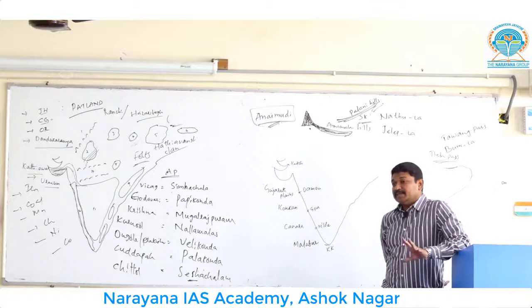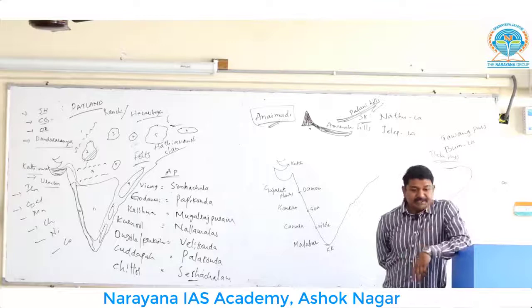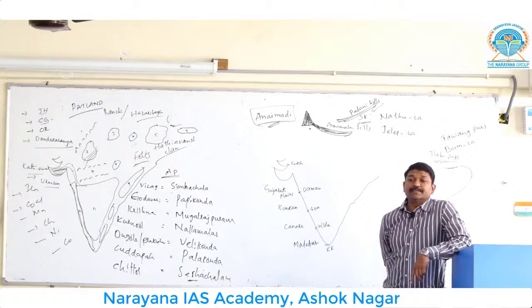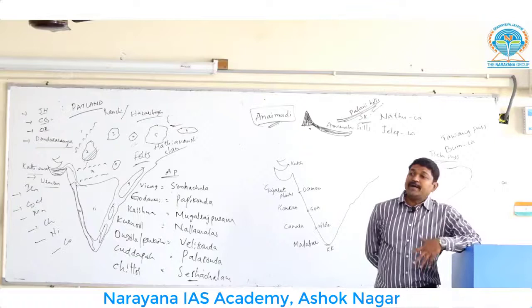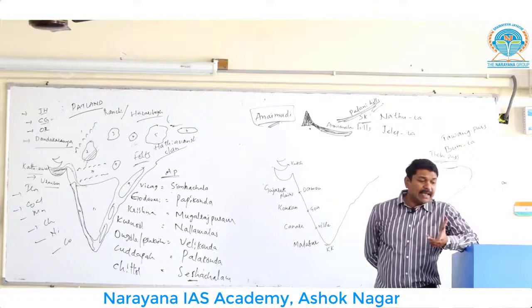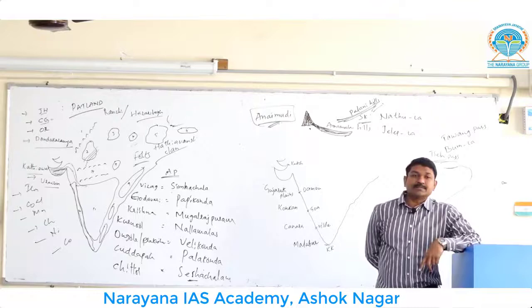On the western side from Gujarat till Kanyakumari, the four coastal names are: Gujarat plains, Konkan, Kenara, and Malabar. Now for the east coastal plains — they are broader in size, with an average width of 500 kilometers, compared to a maximum of only 150 kilometers on the west coast.